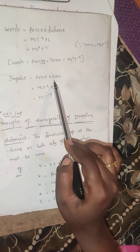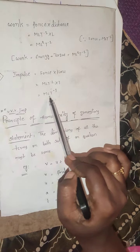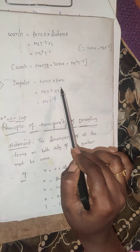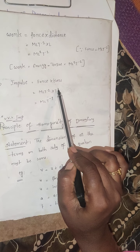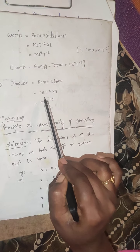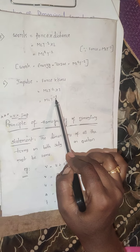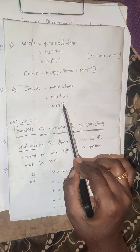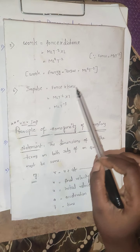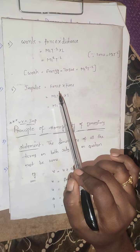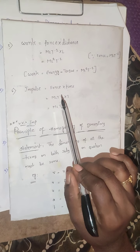Mass, length, time — all three must appear. So the dimensional formula of velocity is M to the power of 0, L, T to the power of minus 1. M has power zero because mass is not involved in velocity.